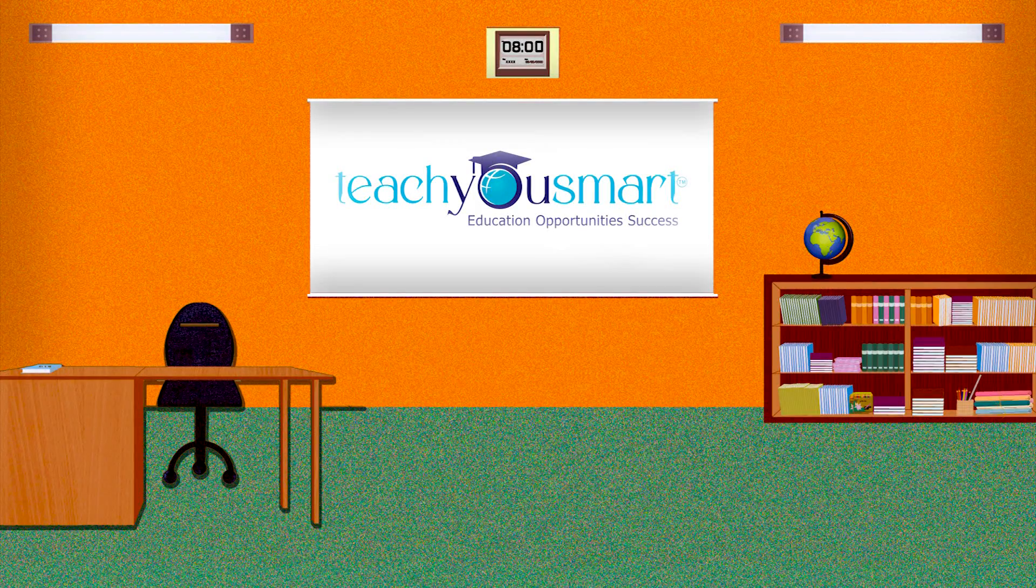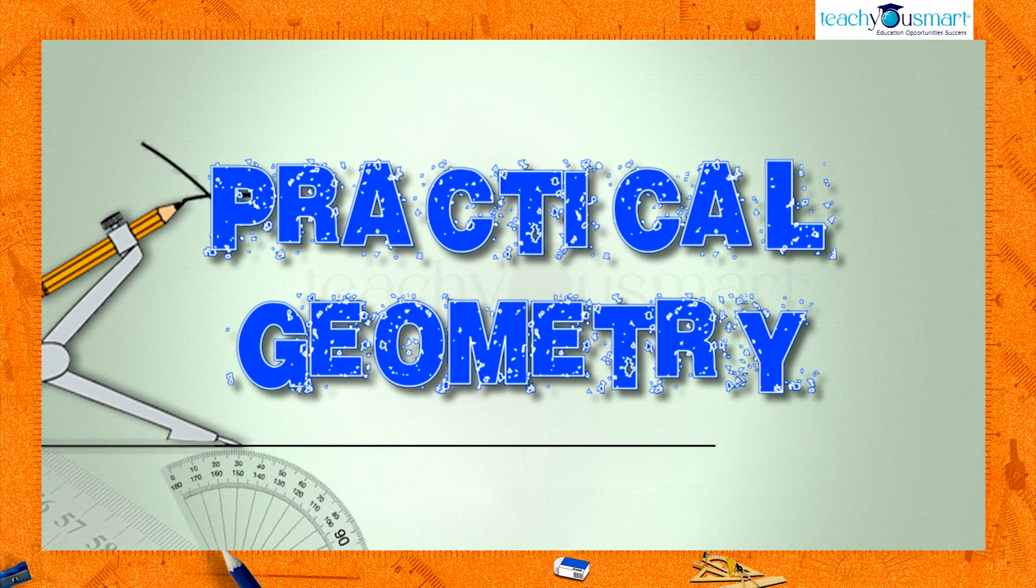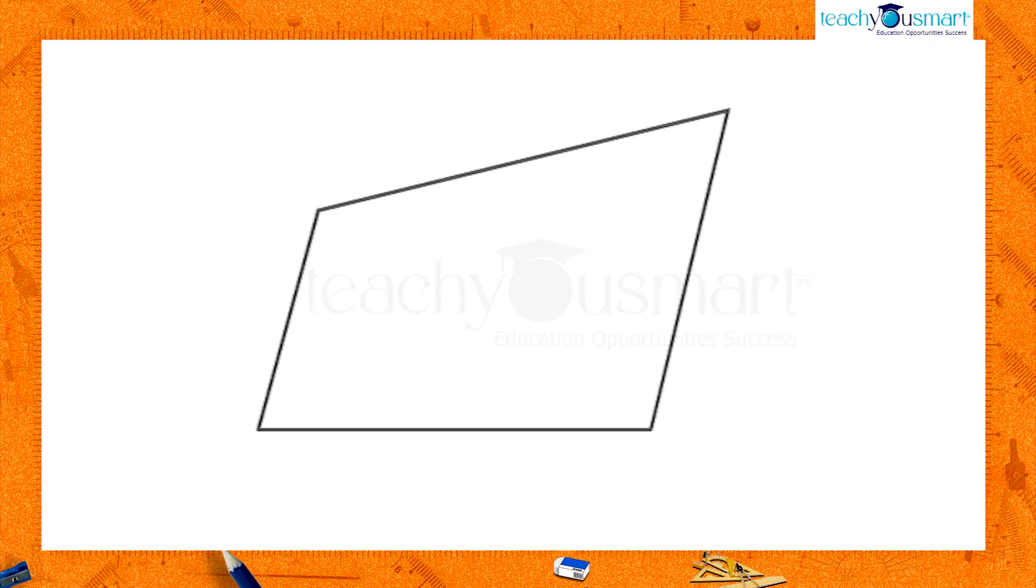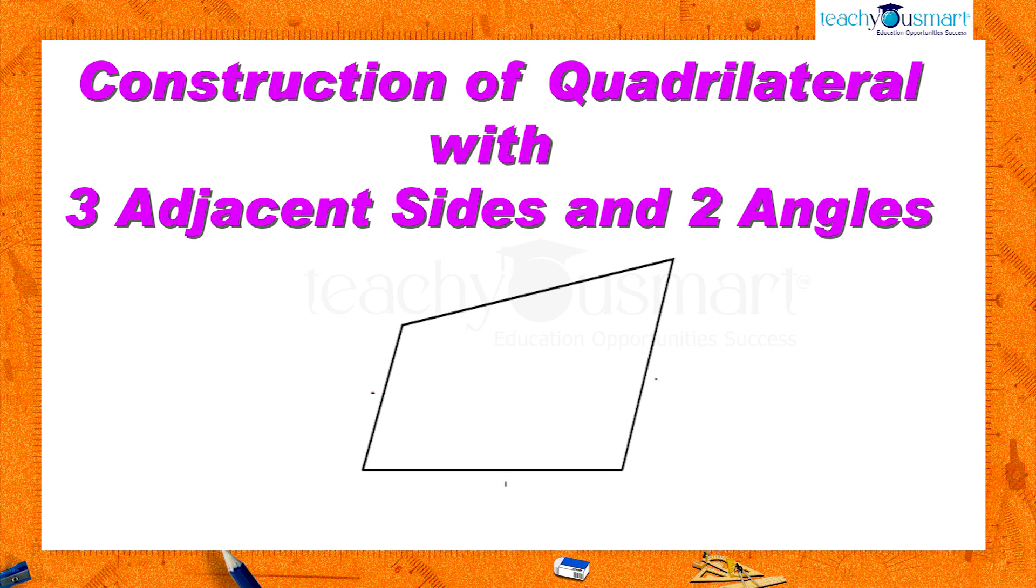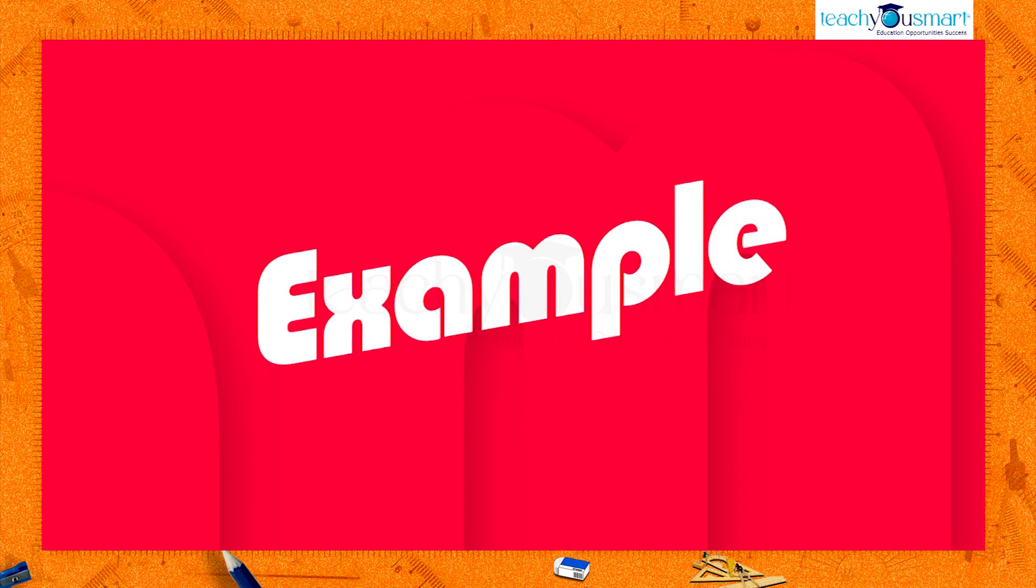Hello students, let's continue our journey through practical geometry. In the previous section we discussed the construction of quadrilateral with two adjacent sides and three angles. Today we are going to construct a quadrilateral with three adjacent sides and two included angles. Let's see how to construct the quadrilateral through an example.